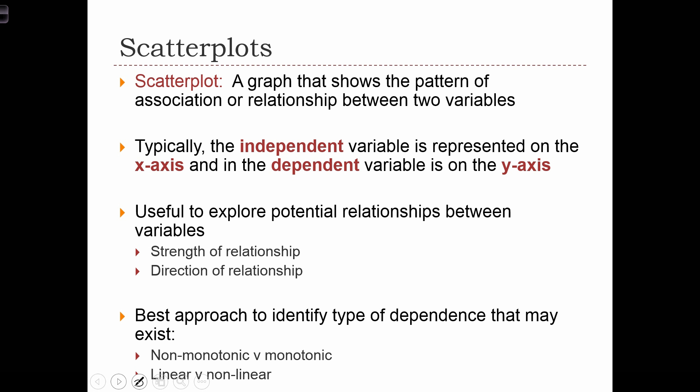The scatterplot is a useful tool to explore the relationships between variables. In particular, we're interested in knowing the strength of a relationship and the direction of the relationship. Is it a positive relationship or a negative relationship? Using a scatterplot is the best way to identify the type of a relationship or dependence that may exist between two variables. For example, we are interested in knowing the difference between monotonic and non-monotonic relationships, and linear versus non-linear relationships. Let's look at a few examples of these concepts.